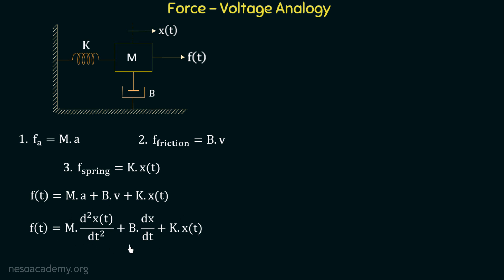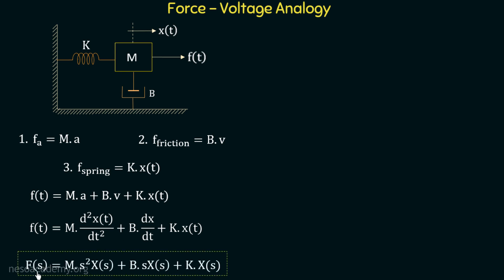Now if we apply Laplace transform in this equation, we will have: F(s) = m·s²·X(s) + b·s·X(s) + k·X(s). And this is the equilibrium equation for this mechanical system.